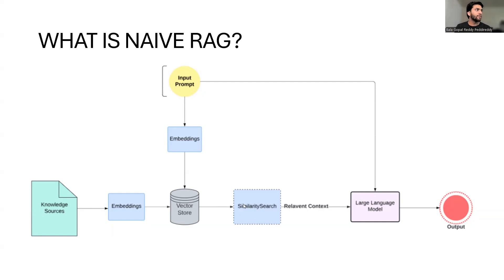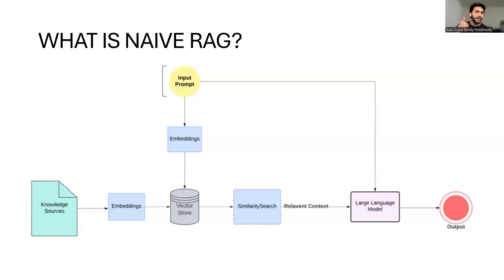Let me give you a brief explanation of this flowchart. Imagine you have some knowledge sources like books, articles, or websites in electronic form, and you have a question related to that. First, the information in the knowledge sources is converted into embeddings, which are in numerical format and also preserve the semantic meaning of the context. When you ask a question, the query is transformed into numerical representations called embeddings, and in the Vector Store, these embeddings are compared to the embeddings of documents.